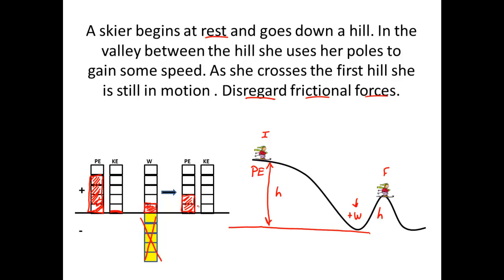How fast is she going on the final side? We gained one box of positive work, plus four boxes of PE initially — five total units of energy. So I need five units on the final side. I'll give her three boxes of kinetic energy, which together with two boxes of potential energy equals five. So my potential energy and work have been converted into a little less PE and more KE.